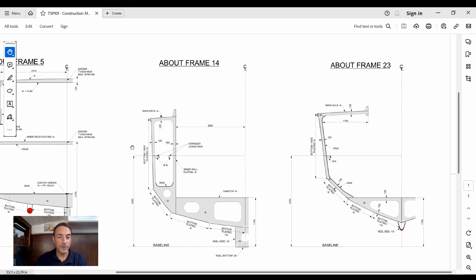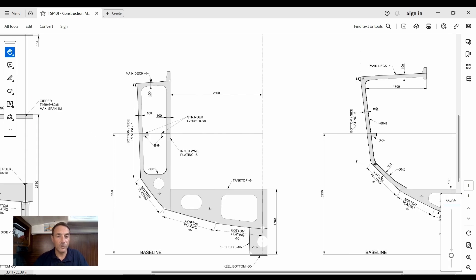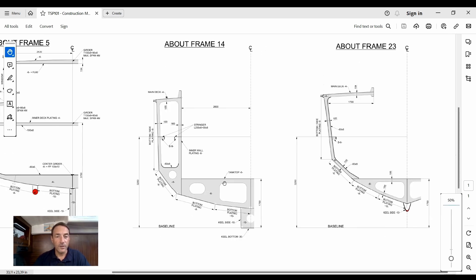Then we've got about frame 14, which is in the cargo hold area. We've got the same thing: we've got a tank top, we've got a bottom, framing and plating, a side tank. So this will be a ballast tank, this will be a ballast tank, and we've got a queue.